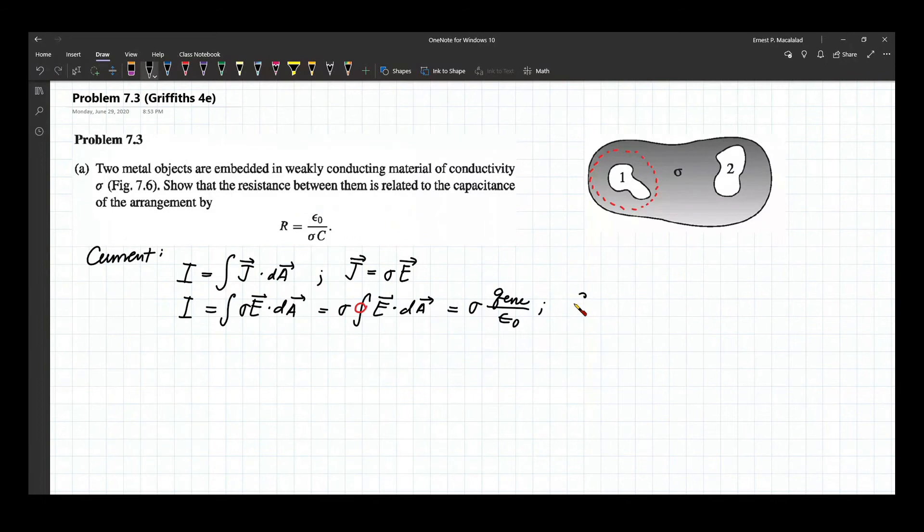Since the capacitance is equal to charge divided by the potential difference between the wires or between the conductors, and by Ohm's law V is equal to IR. So imagine this as your case.